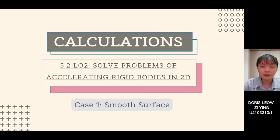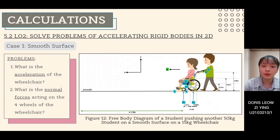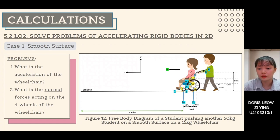Another method for LO2 considers two cases: case 1 with a smooth surface and case 2 with a rough surface. For case 1, we find the acceleration and the normal forces acting on each of the four wheels. A free body diagram shows a student pushing a 50 kg student on a 15 kg wheelchair on a smooth surface, with center of mass assigned as G1 and G2 and a coordinate system established.